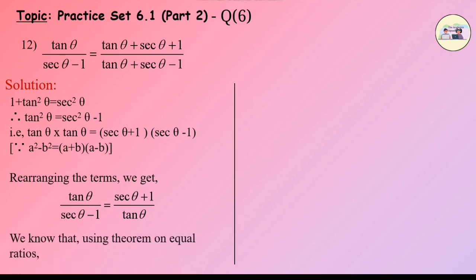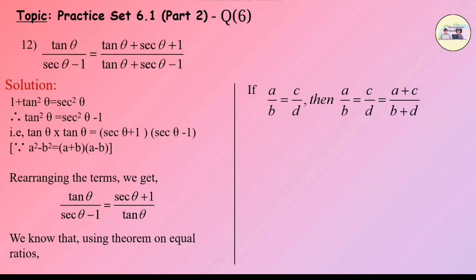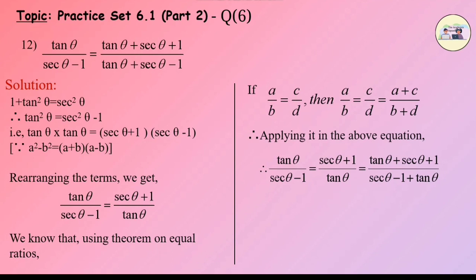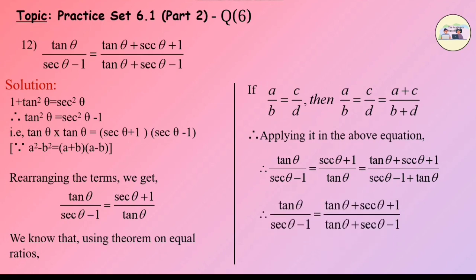Using the theorem on equal ratios: if a/b = c/d, then a/b = c/d = (a + c)/(b + d). Applying this: tanθ/(secθ - 1) = (secθ + 1)/tanθ = (tanθ + secθ + 1)/(secθ - 1 + tanθ). Therefore LHS = RHS.